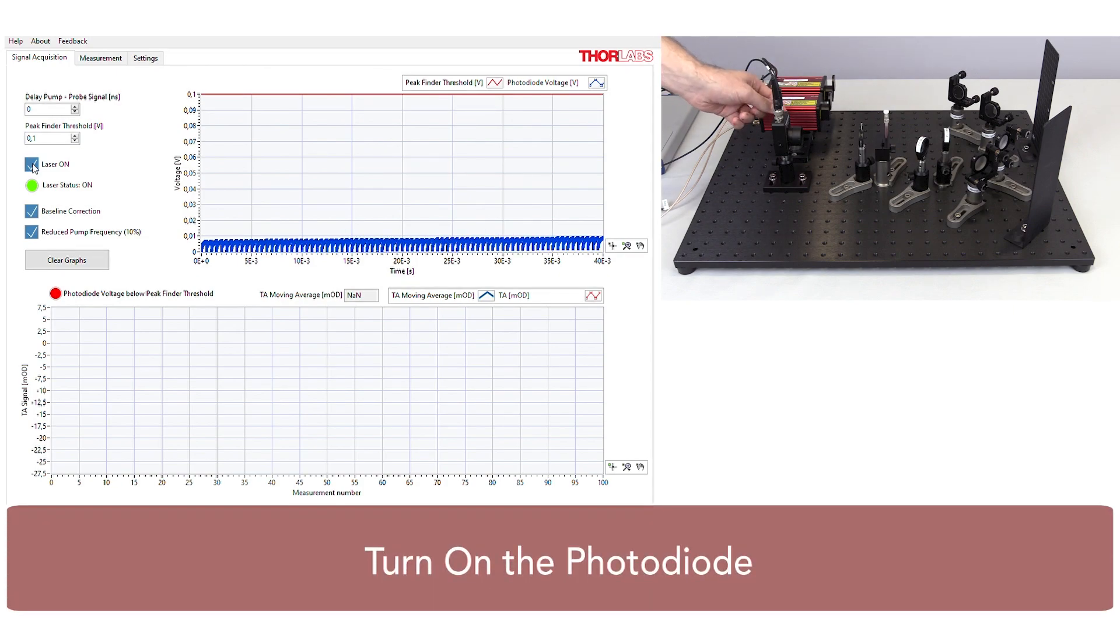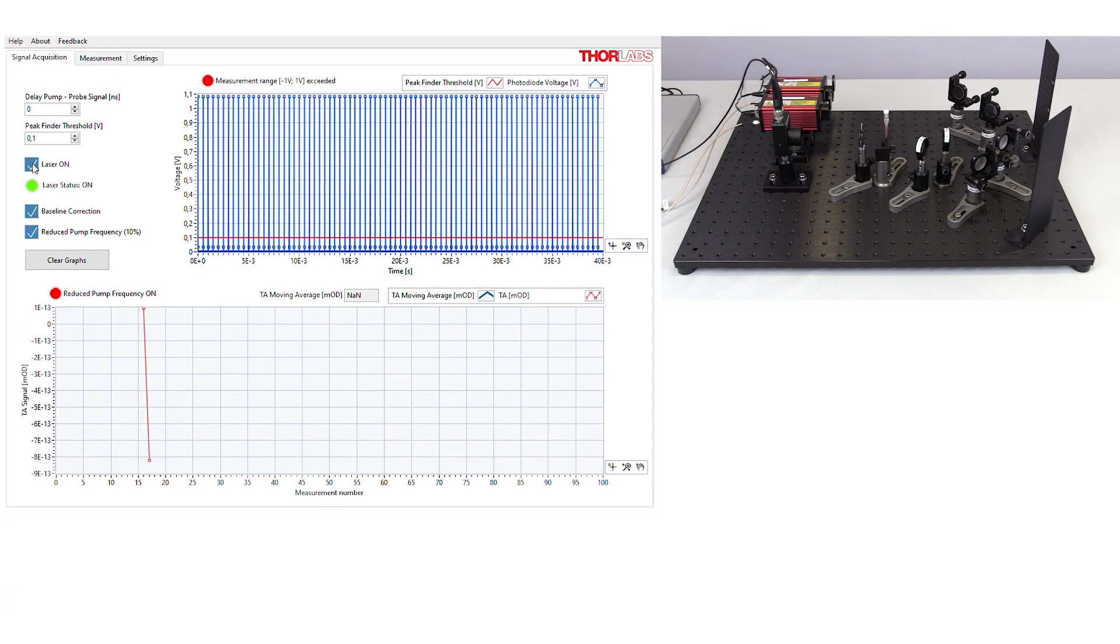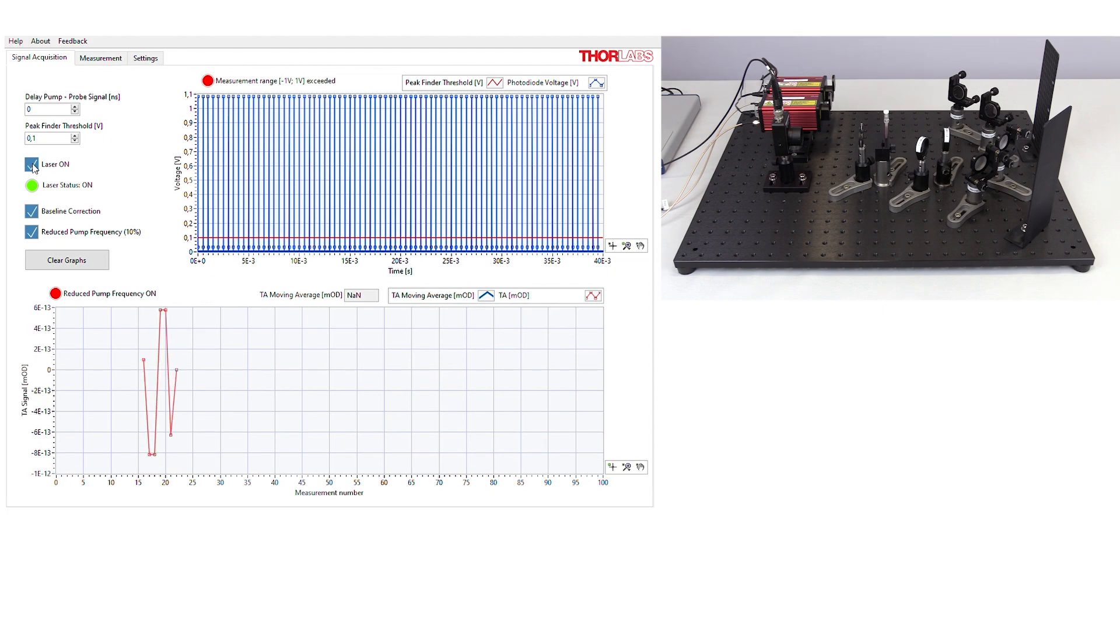Now, turn on the photodiode. The power status LED on the side of the housing should appear green. Note that the photodiode gain setting should already be set to 10 decibels.